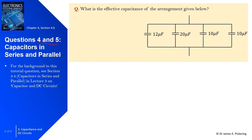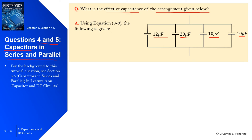In questions 4 and 5 we're going to look at capacitors in series and parallel. In question 4, what is the effective capacitance of the arrangement given below, where you've got 12, 20, 10, and 10 microfarads? Using equation 3.6, when capacitors are in parallel we simply sum the values: C1 plus C2 plus C3 plus C4, which is 10 plus 20 plus 10 plus 10, giving us 52 microfarads.